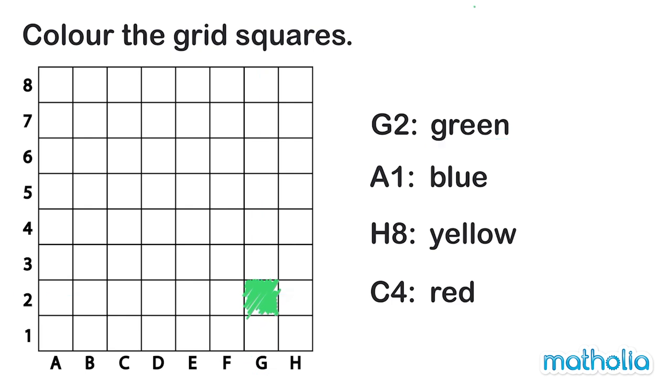Next is square A1. Can you point to A1? Column A, row 1, and color it blue.